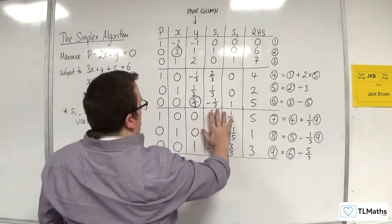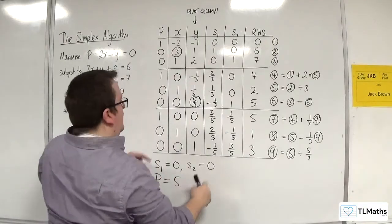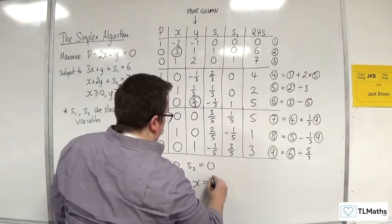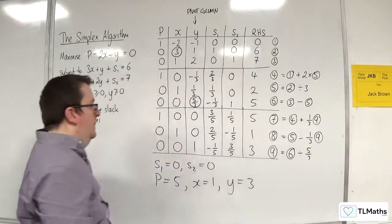With them 0, P is equal to 5. X is equal to 1. And Y is equal to 3.